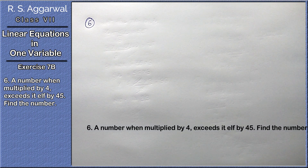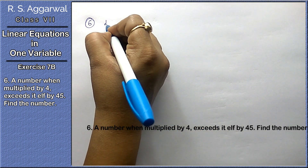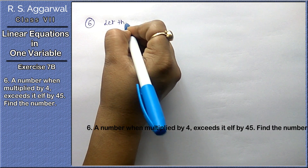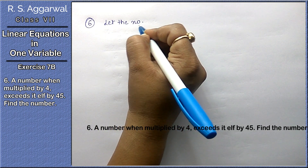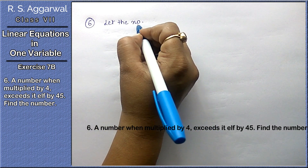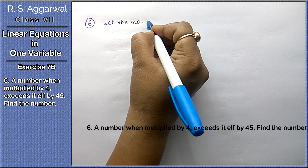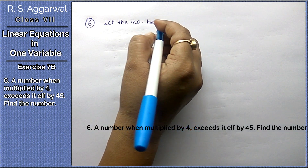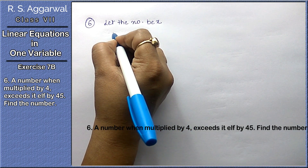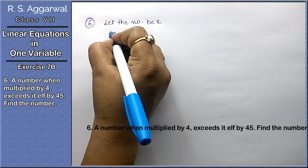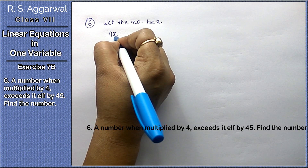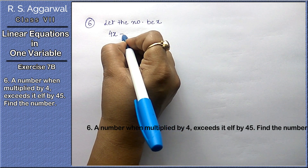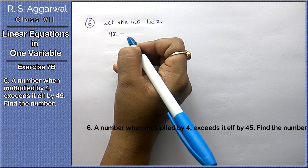Question 6: A number when multiplied by 4 exceeds itself by 45. Find the number. Let the number be x. A number when multiplied by 4 exceeds itself — here 'exceeds' means the difference, so it is 4x minus x.